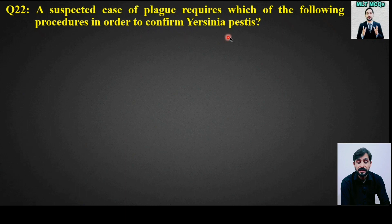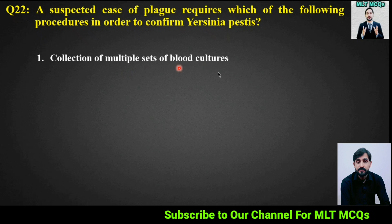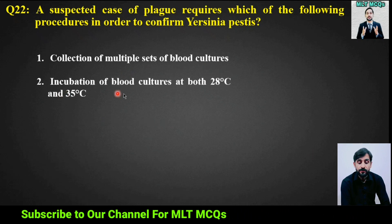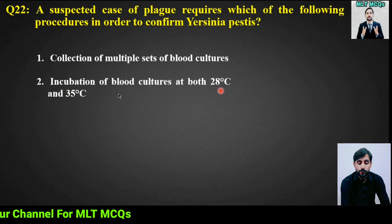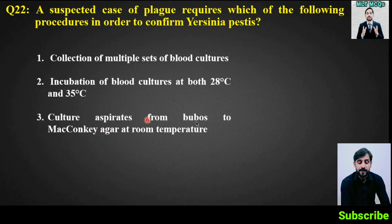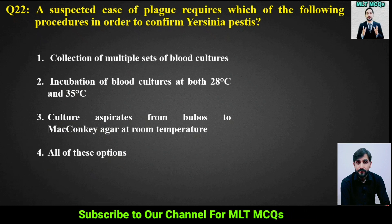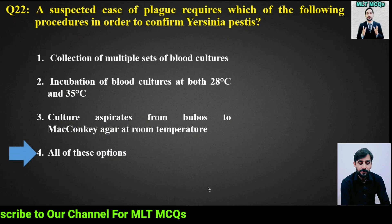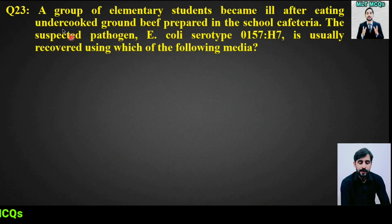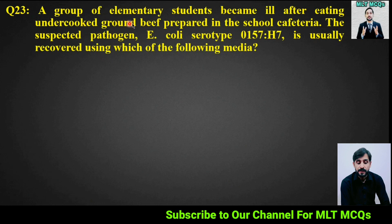MCQ number 22: A suspected case of plague requires which of the following procedures to confirm Yersinia pestis? Options: (1) collection of multiple sets of blood cultures, (2) incubation of blood culture at both 28°C and 35°C, (3) culture aspirates from buboes on MacConkey agar at room temperature, (4) all of these. The right answer is option 4: all of these.